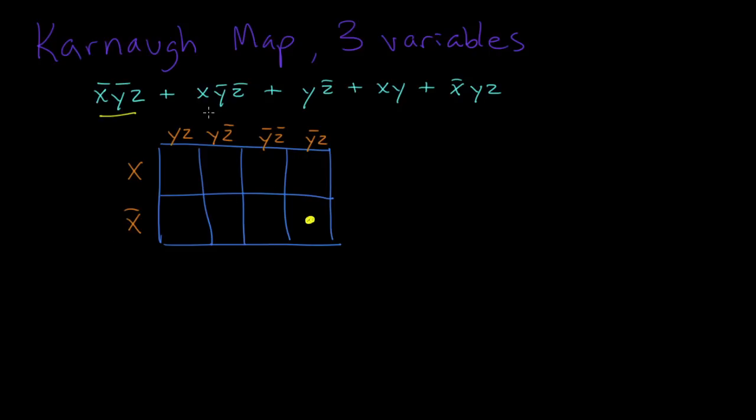The next one is the intersection of x, not y, and not z, which is a third from the left in the top row.